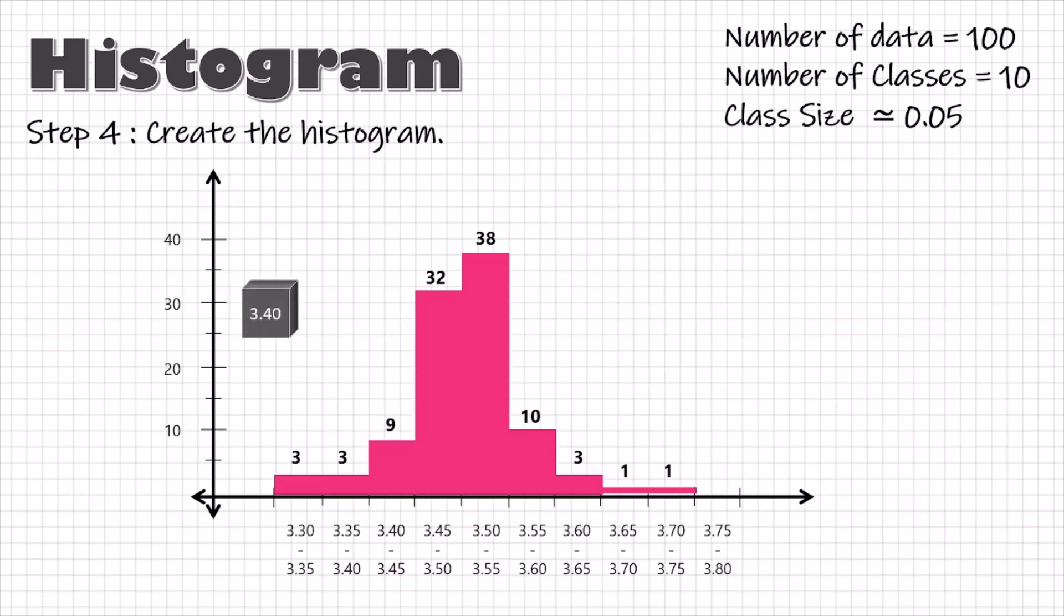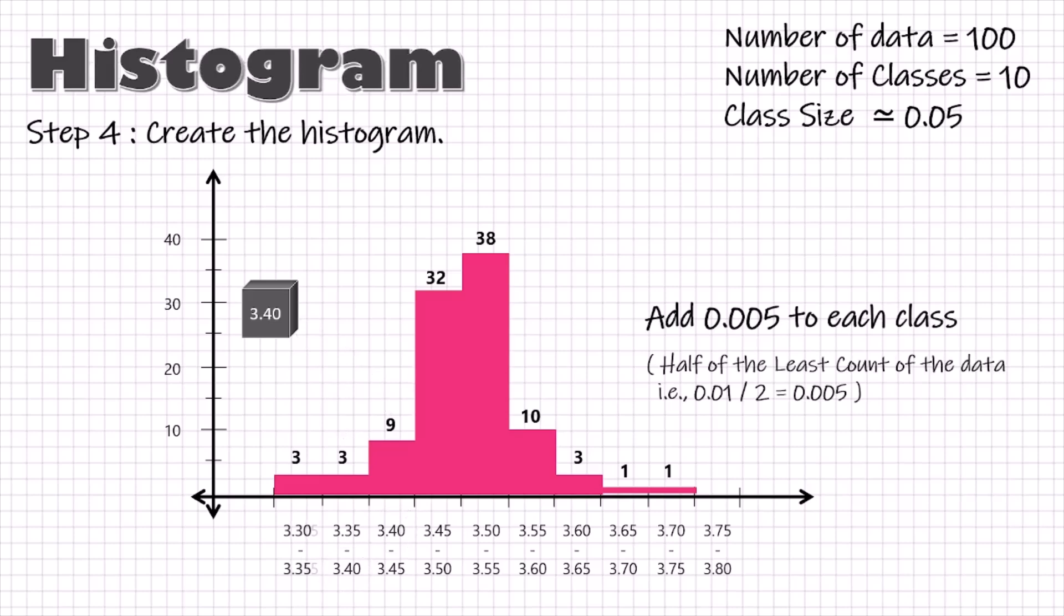One problem that we may face is for parts like 3.40, where the question becomes whether to keep this part in this class or in the next class. There are few rules for this, but again to keep things simple, add 0.005 in each class point. So, 3.30 becomes 3.305 to 3.355 and so on. Now, we can easily place our parts in these classes.